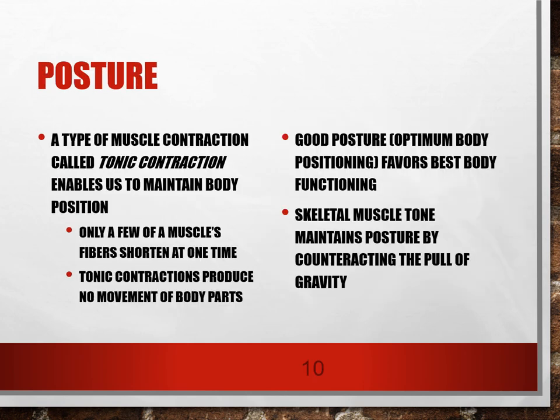In this lecture, we're going to talk about two different types of muscle contraction: tonic and titanic. Tonic contraction is also referred to as muscle tone, and a good example is posture. When we are maintaining a good upright posture, very few of a muscle's fibers are shortening at one time. This muscle tone helps us maintain posture by counteracting the pull of gravity.